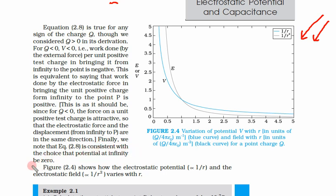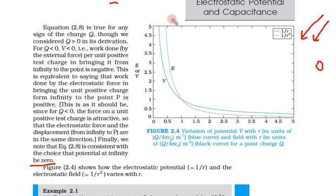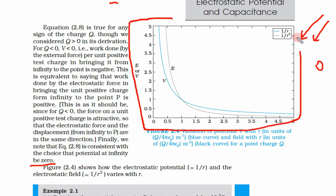We can choose potential at infinity to be zero — this is also consistent. Now this figure is important and has come in the exam several times.